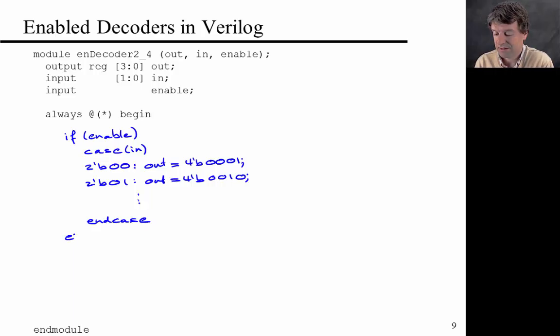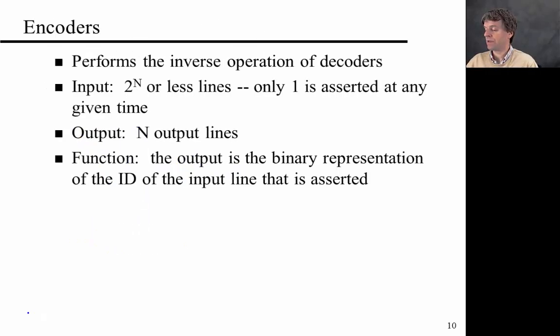Then else, so if enable is not true, essentially, our output is just going to be 0. And then end module. So that's a really simple way of realizing an enabled decoder in Verilog using a case statement.